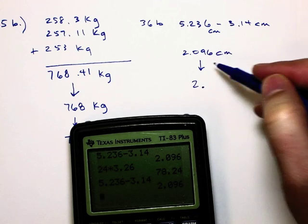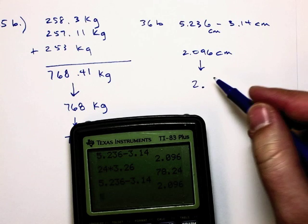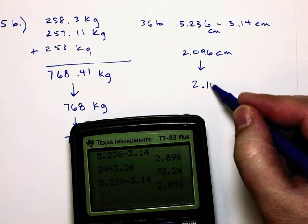What's the digit past the 9? A 6. Is that round up or down? Up. Up. So it would be 2.10 centimeters.